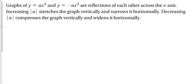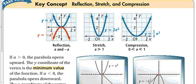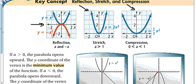The graphs of y = ax² and y = −ax² are reflections across the x-axis. Increasing the absolute value of a stretches the graph vertically and narrows it horizontally — that is a vertical stretch. Decreasing the absolute value of a compresses the graph vertically and widens it horizontally. For example, 2x² is thinner than x², and ½x² is flatter than x².